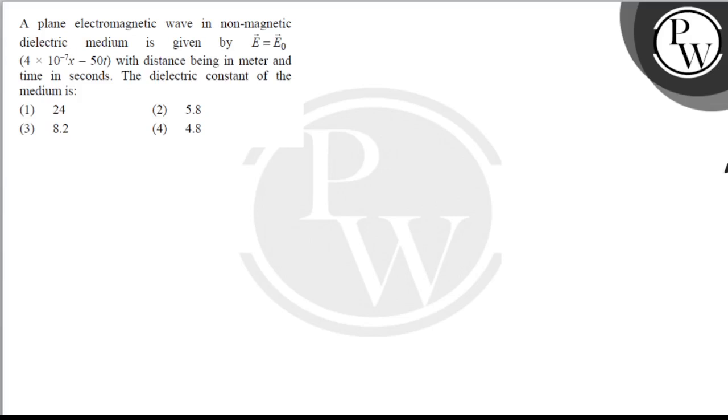Hello, let's get the question. A plane electromagnetic wave in non-magnetic dielectric medium is given by E equals E naught 4 into 10 to the minus 7, x minus 50t, with distance being in meter and time in second. Find the dielectric constant of the medium.